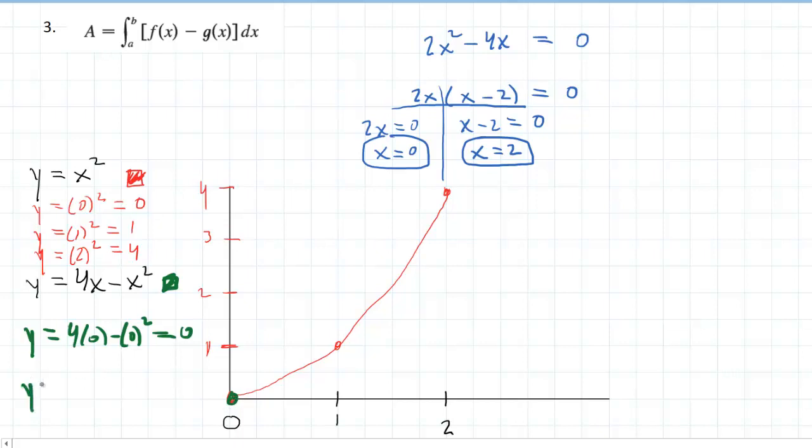We'll plug 1 in. So we'll have 4 times 1 minus 1 squared. When we simplify that, we should get 3. So 1 comma 3.